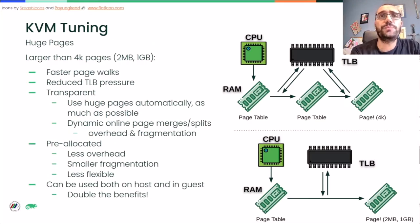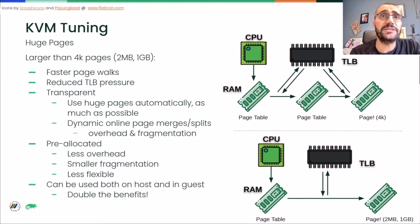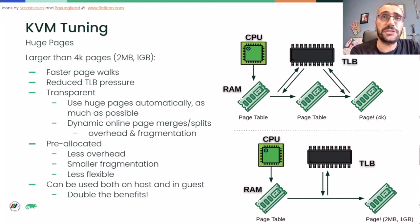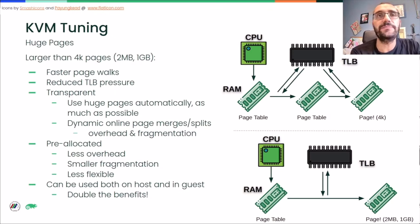Using huge pages or large pages means using memory pages bigger than the default 4 kilobytes for backing the VM memory. This improves performance because walking the various levels of the page tables for translating guest virtual addresses into host physical addresses has to happen less often, lowering the pressure on the TLB. And when it happens, it is also faster.